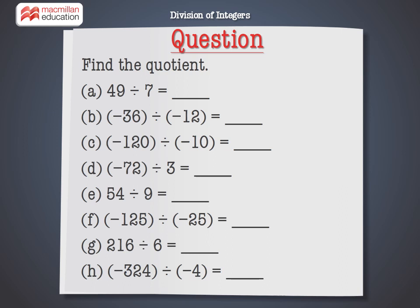Find the Quotient. E: 54 divided by 9. F: minus 125 divided by minus 25. G: 216 divided by 6. H: minus 324 divided by minus 4. The number before the division symbol is the dividend and the number after is the divisor.